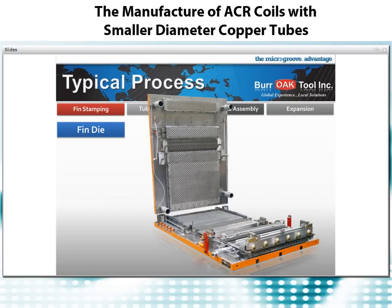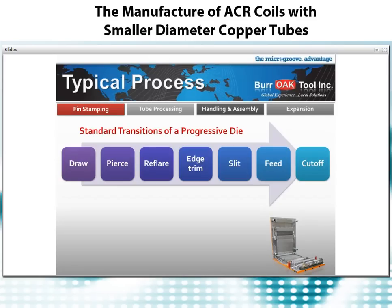The fin line supports the fin die — the actual tooling that determines the configuration of the fin itself. It is a progressive type die and can be either a draw or an extrude design. A progressive die moves the material in specific increments, performing a unique task at each station. In the fin die, the usual stations are: the draw, which governs material for the collar; the pierce, making the collar hole; the flare, determining the final collar height; the edge trim, finishing the outside edges; the slit, determining the number of rows wide in each fin; the feed, providing movement of the fin stock through the die; and the cutoff, which makes the correct length of fin.